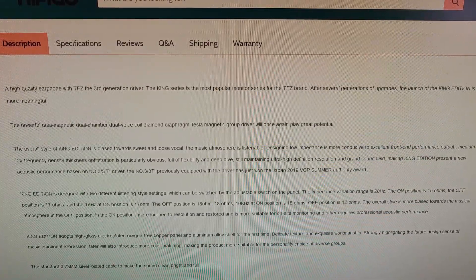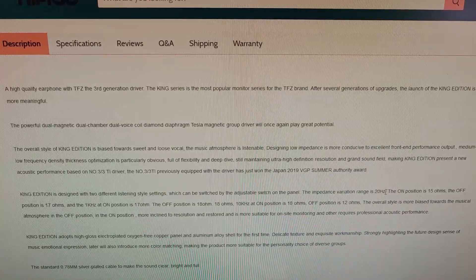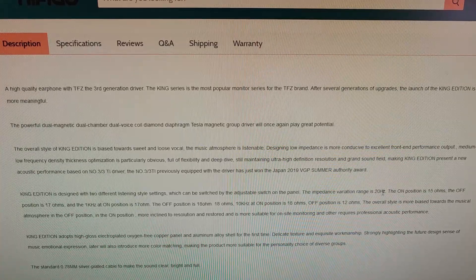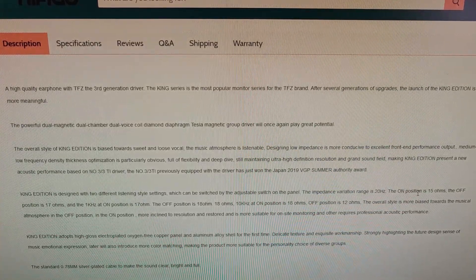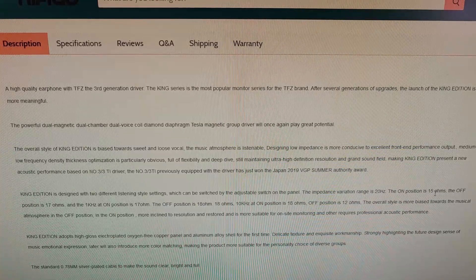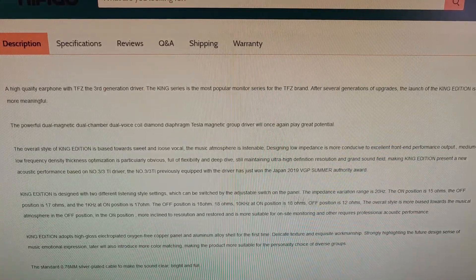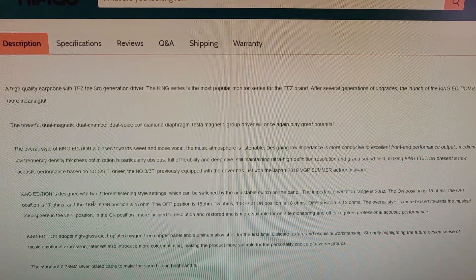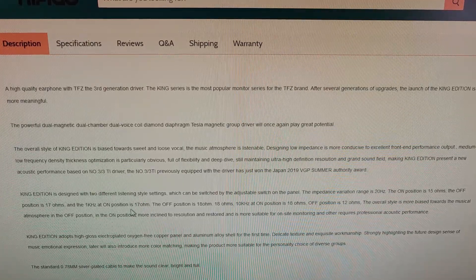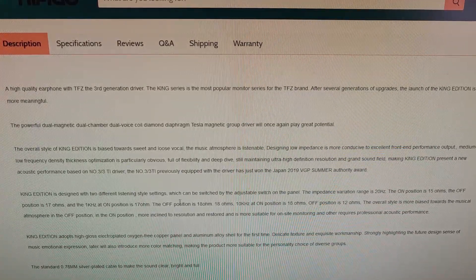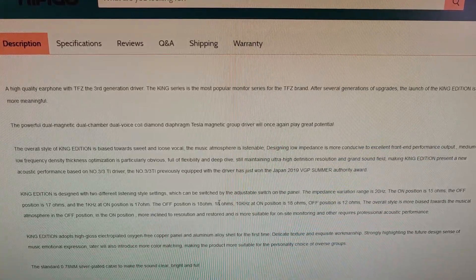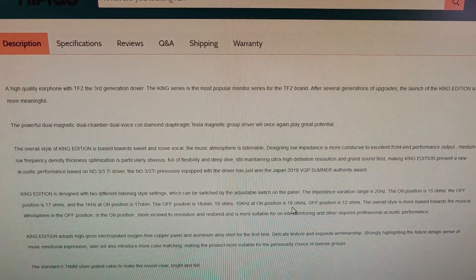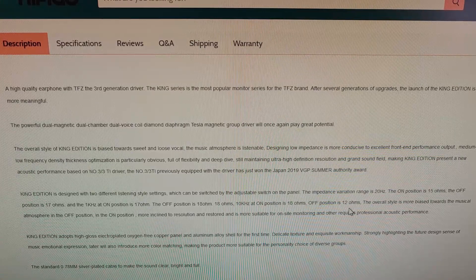We'll break this down in normal American English. The impedance variation range is 20 hertz. So what they're saying is, for the 20 hertz frequency, the on position will give you a 15 ohm readout, approximately. The off position on the dip switches will give you 17 ohms. At 1 kilohertz, it'll give you, in the on position, a 17 ohm readout, and in the off position, an 18 ohm readout. At 10 kilohertz, it'll give you 18 ohms on, 12 ohms off.